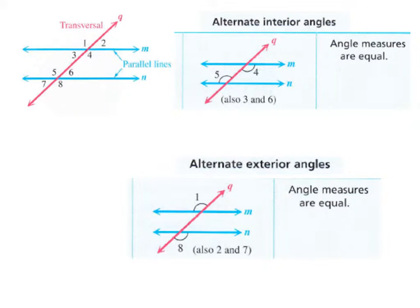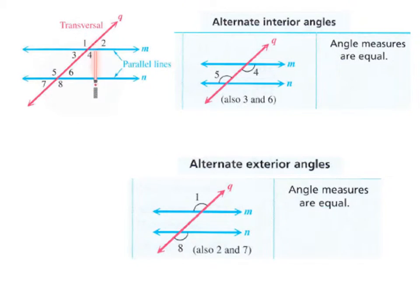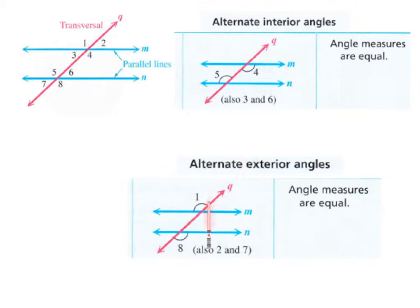Here's another important set of information regarding parallel lines intersected by a transversal. We have our two parallel lines, and this is what we call a transversal line that intersects the two others. That forms four angles at each intersection between the parallel lines and the transversal. One thing you can use to summarize this is that there are really only two different angle measures in this situation.